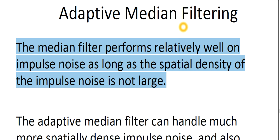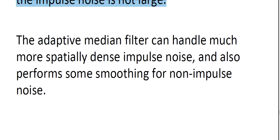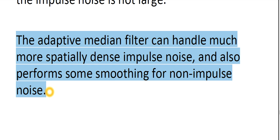Today our main focus will be on adaptive median filtering. The median filter performs relatively well on impulse noise as long as the spatial density of the impulse noise is not large. The adaptive median filter can handle much more spatially dense impulse noise and also perform some smoothing for non-impulse noise — advantages that go beyond what the standard median filter can offer.